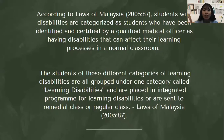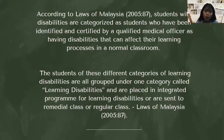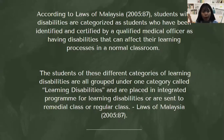Regarding accessibility, according to the laws of Malaysia, students with disabilities are categorized as students who have been identified and certified by a qualified medical officer as having disabilities that can affect their learning process in a normal classroom. Students of these different categories of learning disabilities are all grouped under one category called learning disabilities and are placed in integrated programs for learning disabilities, or are sent to remedial class or regular class based on the laws of Malaysia.